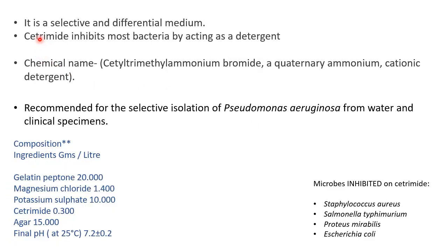Cetrimide agar is actually a selective and differential media. It is selective because cetrimide inhibits most of the bacteria by acting as a detergent, so it is mainly used for isolation of Pseudomonas aeruginosa. The chemical name of cetrimide — cetrimide is actually a short form — is cetyltrimethyl ammonium bromide. It is a quaternary ammonium salt and cationic detergent.